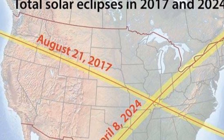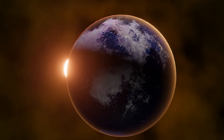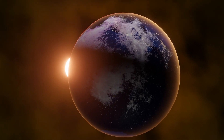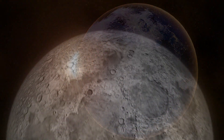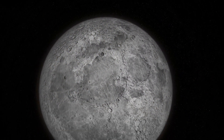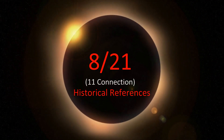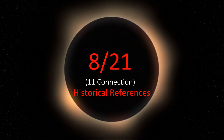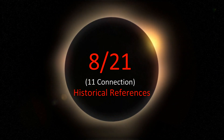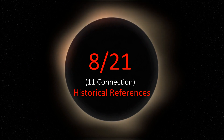God led me in my research to historically look at previous eclipses that landed on 8/21. The last two times we had an eclipse on 8/21 were connected to World Wars: 8/21 of 1914, and 8/21 of 1933.